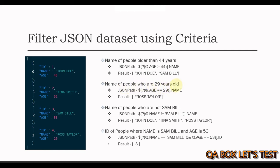Next: name of people who are 29 years old. We say @.age == 29, and we get that record. Then using .name we get Ross Taylor. Next: name of people who are not Sam Bell. We say @.name != 'Sam Bell' — note the single quotes for the string value.